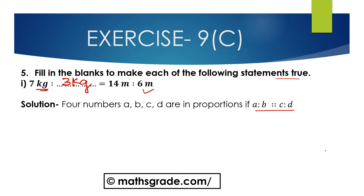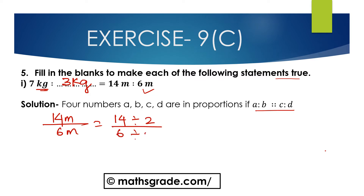We can verify: 14 divided by 6 has common factor 2, so 14 divided by 2 is 7 and 6 divided by 2 is 3, giving ratio 7 to 3. Similarly 7 kg divided by 3 kg is also 7 to 3. So 7 kg is to 3 kg equals 14 meter is to 6 meter. The missing term is 3 kg.